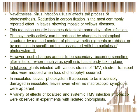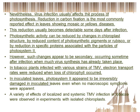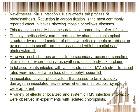In tobacco plants infected with various strains of TMV, electron transport rates were reduced when loss of chlorophyll occurred in inoculated leaves. Photosystem 2 appeared to be irreversibly damaged in inoculated leaves even when no macroscopic symptoms were apparent. A variety of effects of localized and systemic TMV infection in tobacco were observed in experiments with isolated chloroplasts.